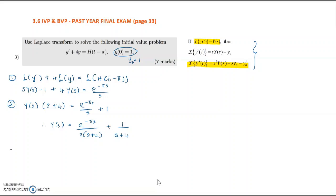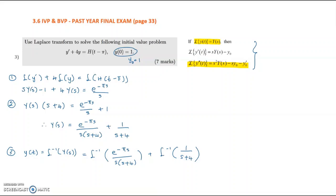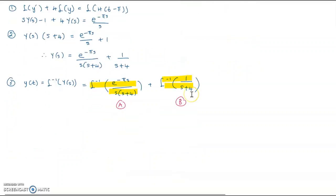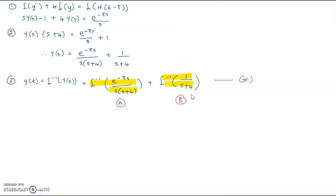For the inverse Laplace of Y(s), we split into two terms: part a is the inverse of e^(−πs) over s(s+4), and part b is the inverse of 1 over (s+4). We solve each individually and then combine for the final answer.